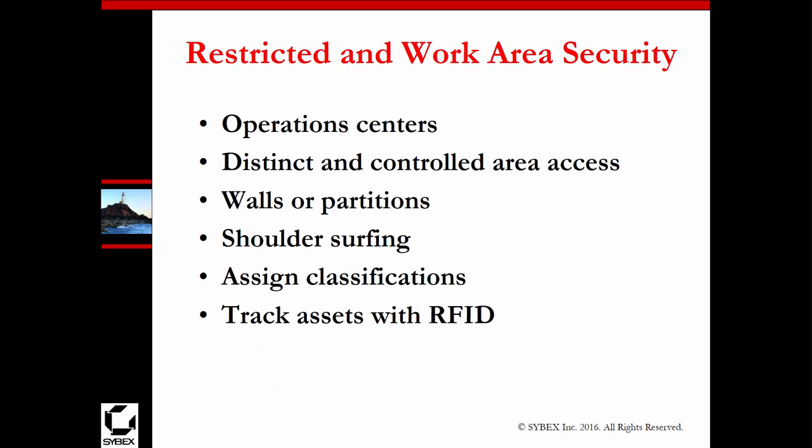Restricted and work area security is always a big one. Maybe we have tracking based off RFID, cameras, or soundproof walls. Walls and partitions that control the flow of information. We should have very distinct controls that govern access to specific areas — cameras are a must, and sometimes security guards are a must. If we're looking at a secure facility, do we have proper egress and ingress? Is this done in such a way that prevents shoulder surfing? Are we checking ID as people enter the building? This is all going to be based off the organization and their structure.